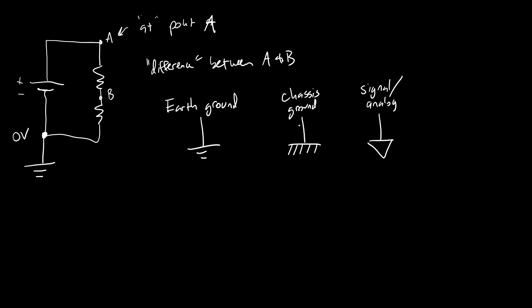Conceptually these all mean the same thing: what you are defining as zero volts or your reference level for voltage. Physically, depending on the circuit, they might mean something different in terms of whether there is a physical wire connected. In this course I am going to use the earth ground symbol, even though that does not necessarily mean — in the case of a battery powered circuit — that you literally have an external wire connected to ground. I'm doing this because in 90% of the textbooks and electronics websites you'll see for homework problems and examples, they still use the earth ground symbol. Just because you see this symbol doesn't mean you need some external ground wire — for example, benchtop equipment like an oscilloscope or a powered breadboard is plugged into a grounded electrical outlet anyway.